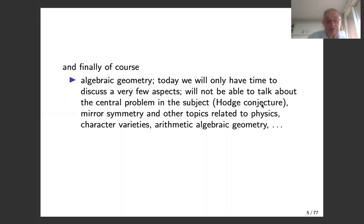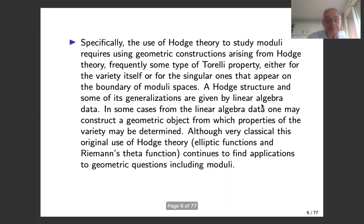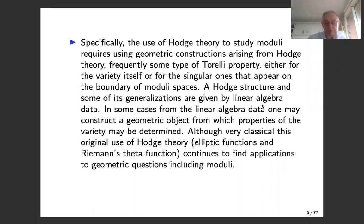Other parts — the main conjecture, the Hodge conjecture, mirror symmetry — I won't have a chance to say much about. Specifically, the use of Hodge theory to study moduli requires some geometric constructions arising from Hodge theory and frequently some sort of Torelli property. A Torelli property means that the Hodge structure one associates to an algebraic variety captures a lot of information about the variety, and in the presence of Torelli properties, Hodge theory provides a very useful tool for the study of moduli.